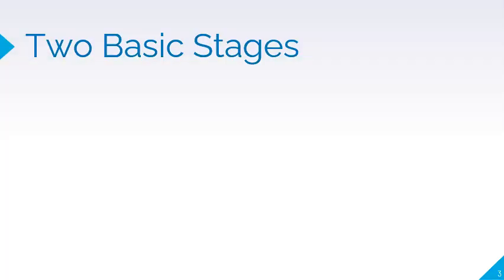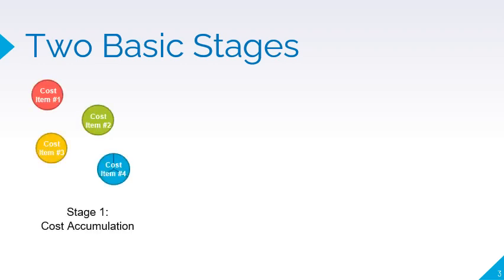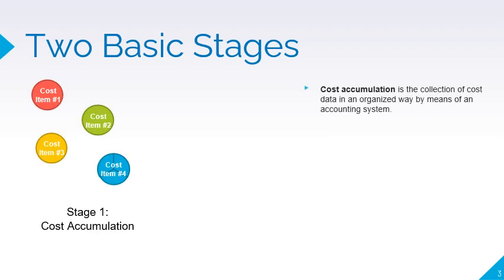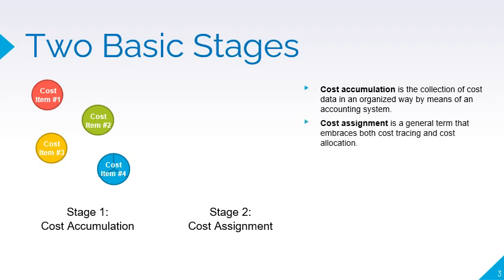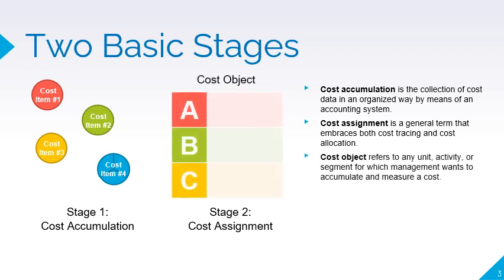Cost accounting has two basic stages. The first stage is cost accumulation — the stage where data on costs are collected. The second stage is the assignment of costs to a cost object. Cost assignment can mean either cost tracing or cost allocation depending on the relation of the cost to the cost object. A cost object is anything for which the management wants to know the costs.